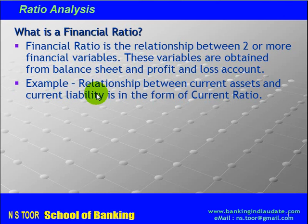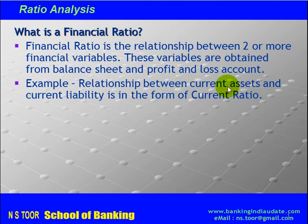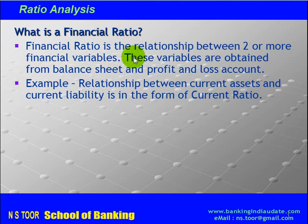For example, the relationship between current assets and current liabilities is expressed in the form of the current ratio. So the relationship between two or more financial variables is called a financial ratio.